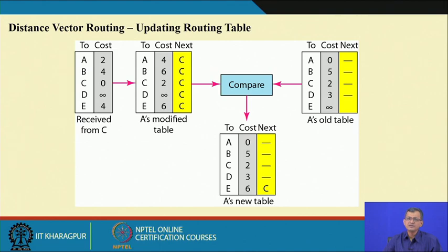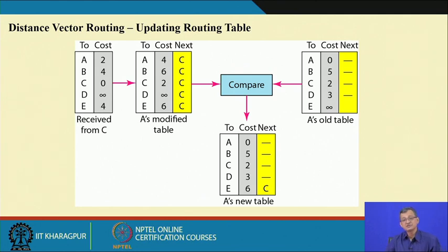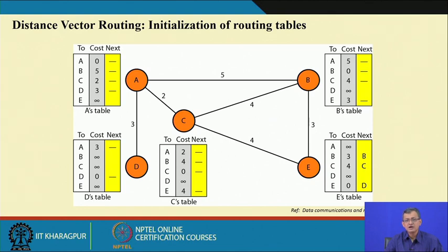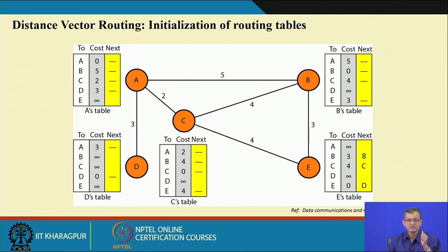Similarly, A will receive information from B also, and the updated table can be compared with B's info. It finally converges, but if it is very dynamic, there may be situations where you end up in undesirable states. I encourage those new to this topic to try to find out these updated tables yourself for B, E, and how it goes on — consulting the references and books.